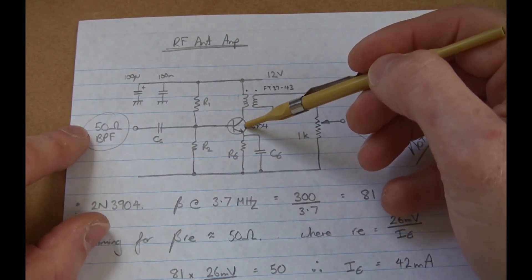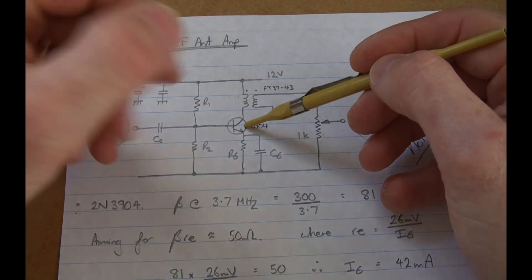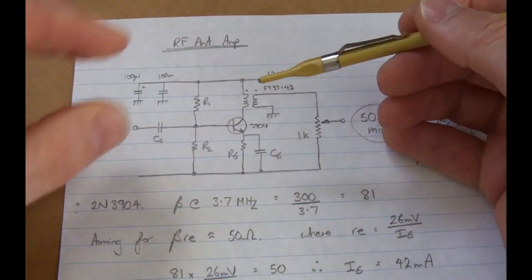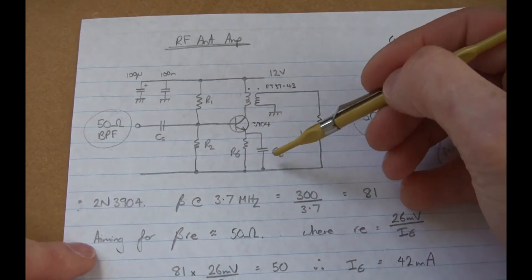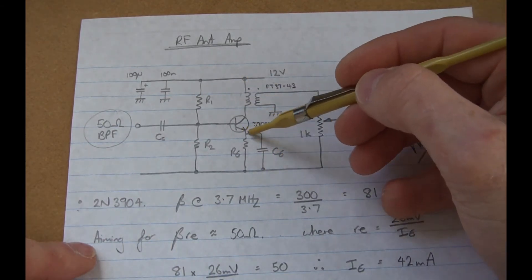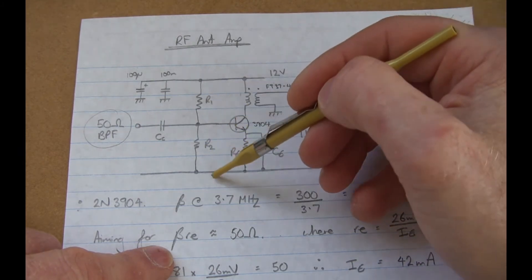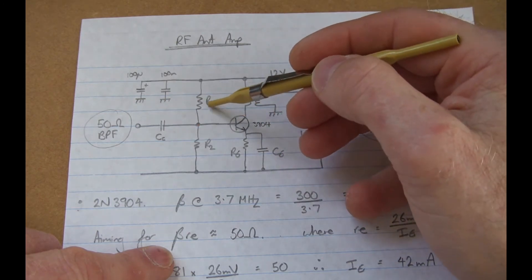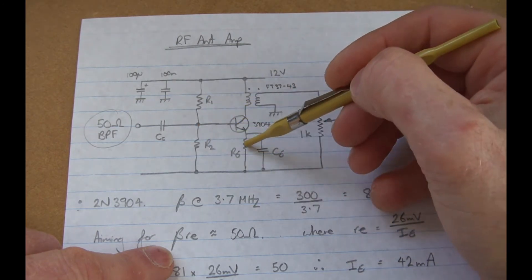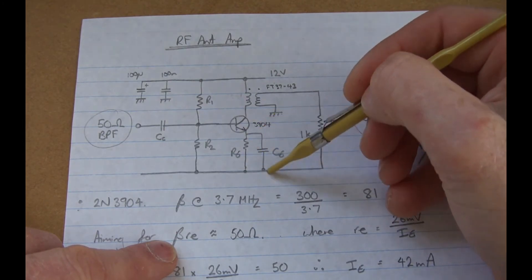Now, the bandpass filter is going to be a 50 ohm output, so I want to look for the input impedance looking into here to be 50 ohms. Because this is fully bypassed here, we're going to have beta RE in parallel with R1. This is now folded down because of the decoupling capacitor here. So it's going to be R1 in parallel with R2 in parallel with beta little RE, because RE here is fully bypassed.